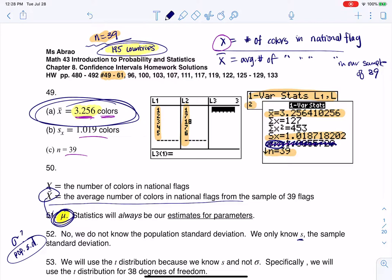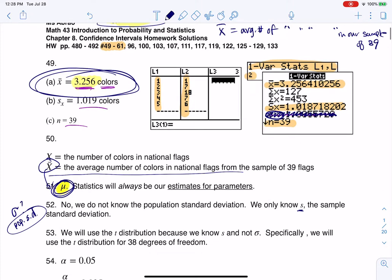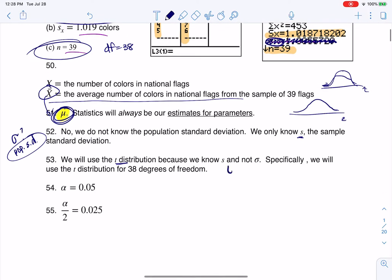And where it sometimes gets confusing is you might think you know it because it's over here on your calculator. But this is part of why I just don't ever look at this line. I wish Texas Instruments wouldn't do that, but they do. So do I know the population standard deviation? No, because again, I did not talk to all 195 countries. So I don't know the population standard deviation. I only know s. So 53 says, which distribution are you going to be using? Well, we're in mean land. We're going to use the T distribution. And you always want to specify what your degrees of freedom are. Because while we only ever have one standard normal curve, meaning the Zs, I actually have an infinite number of Ts.